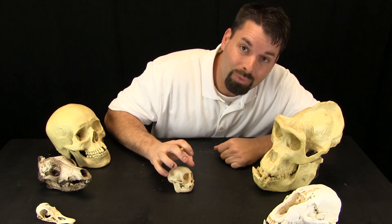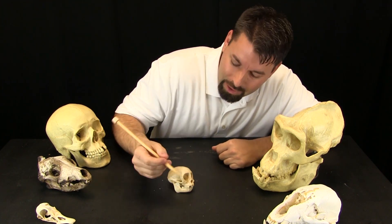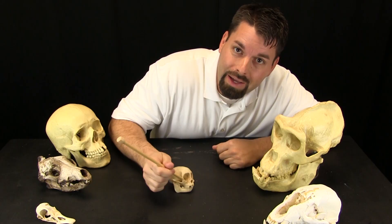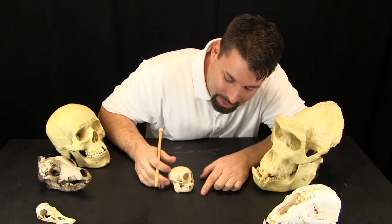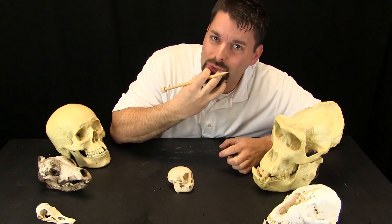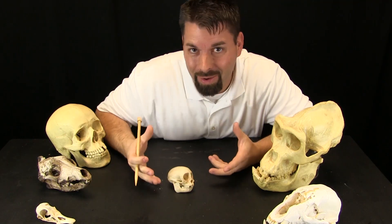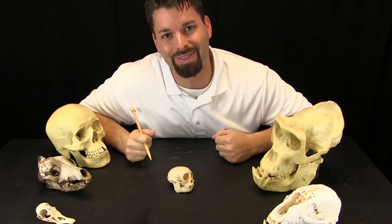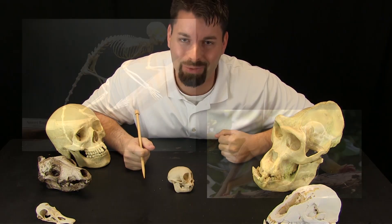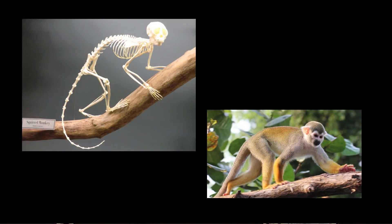Take a look at this skull — a smaller skull with big big eye sockets and its bottom jaw does not stick out. What kind of animal do you think this is? Take a look at this side by side comparison to find out that it is a squirrel monkey.